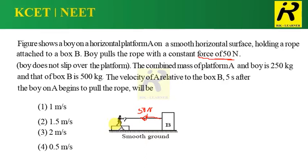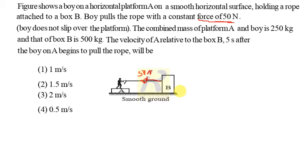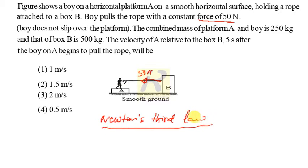What we have to find is the velocity of platform A with respect to B, 5 seconds after the boy applies the force. In this situation, I have to apply Newton's third law. We also note that the ground is smooth — meaning there is no friction between A and the ground, or between B and the ground.